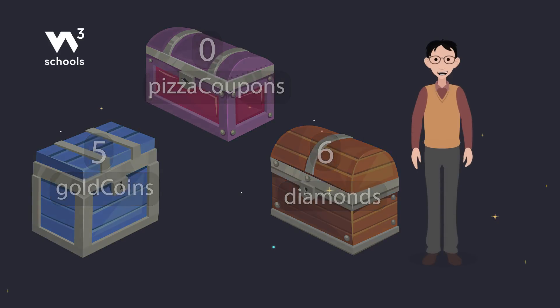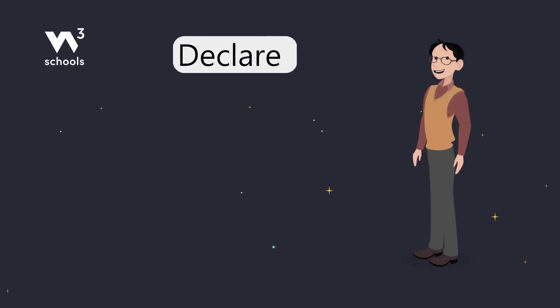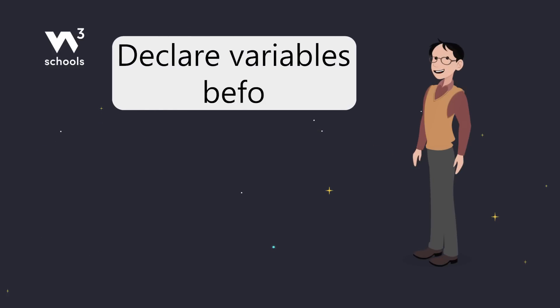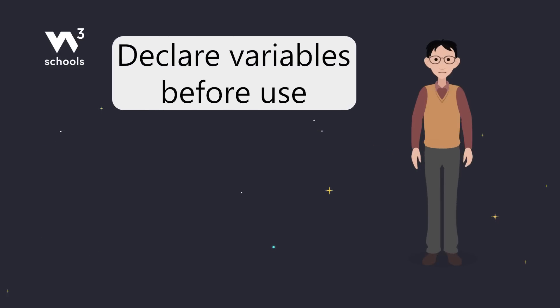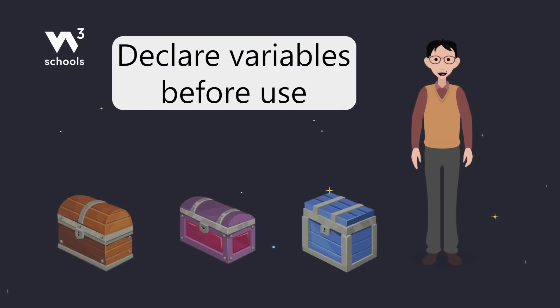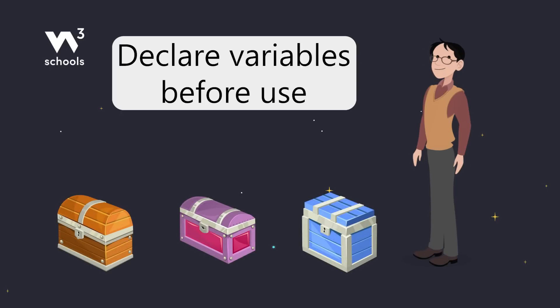Here's a pro tip: always declare variables before using them — it's good programming practice. Declaring variables means creating your treasure chest before putting stuff in. In JavaScript, we've got three main ways to declare variables.